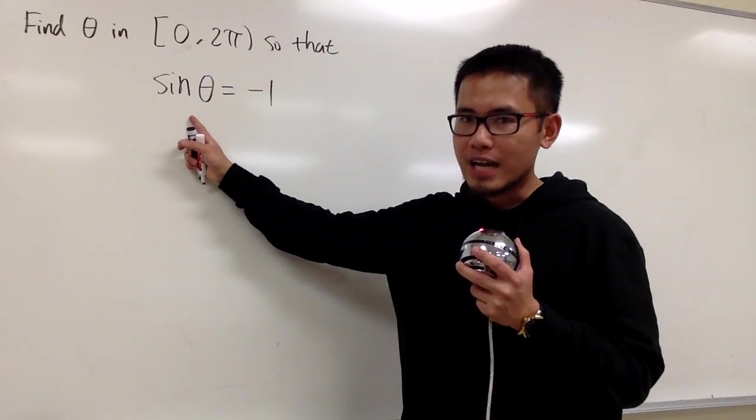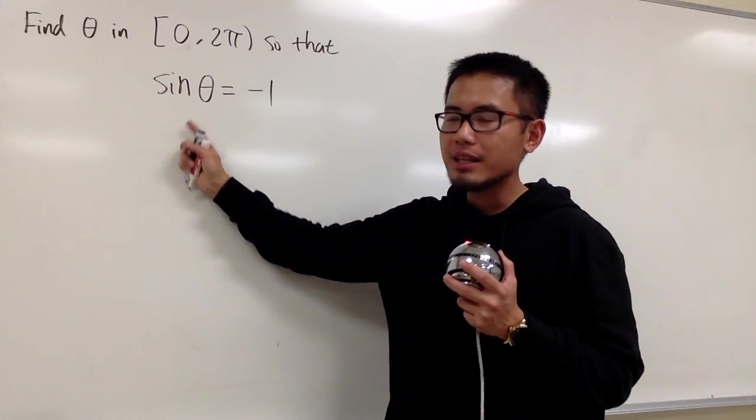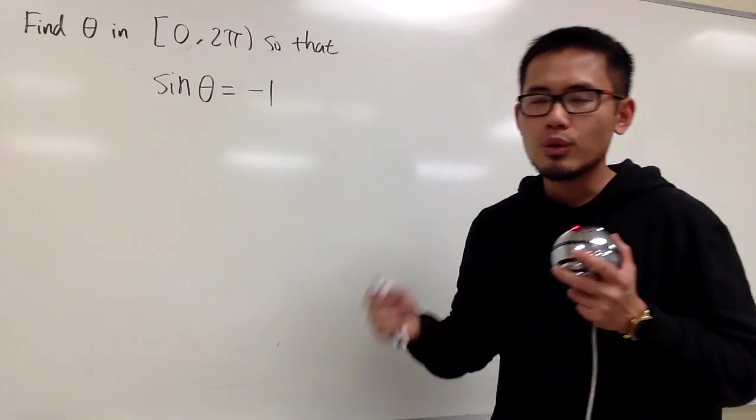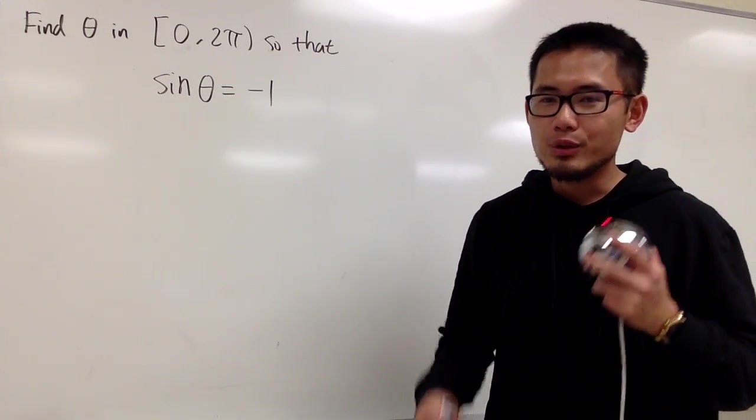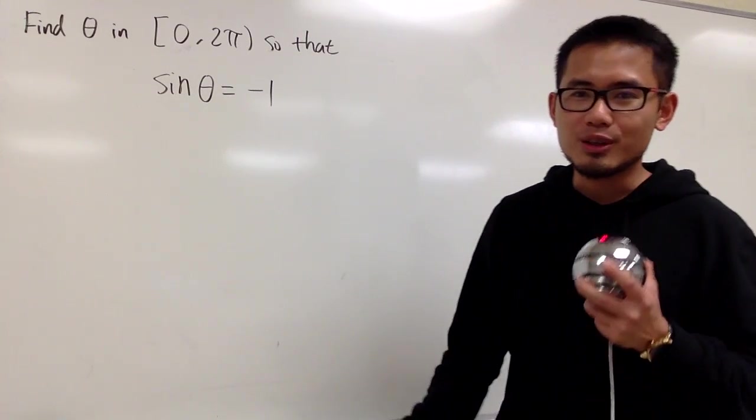So remember, for sine and cosine, when it is by itself, if the right-hand side is 0, 1, or negative 1, you are going to utilize the idea of the unit circle.